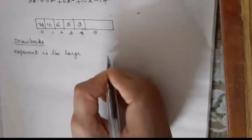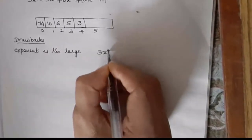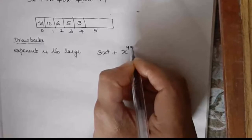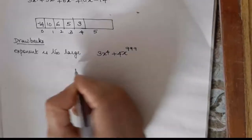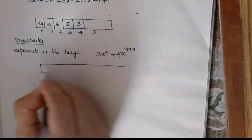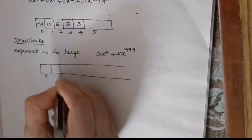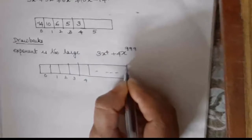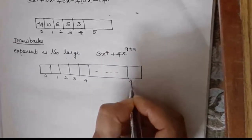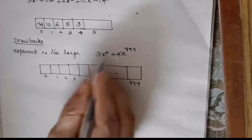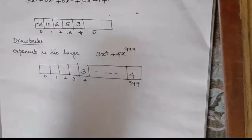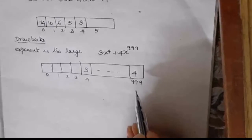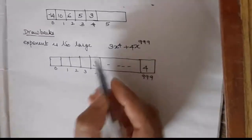For example, if you have 3x raised to 4 plus 4x raised to 9.99, then the array would need to accommodate that very large exponent. That is one problem when the exponent is too large.